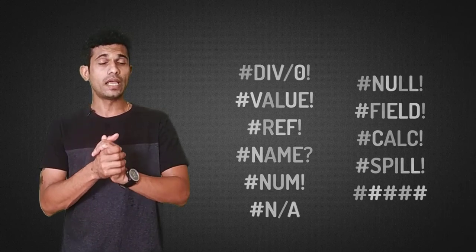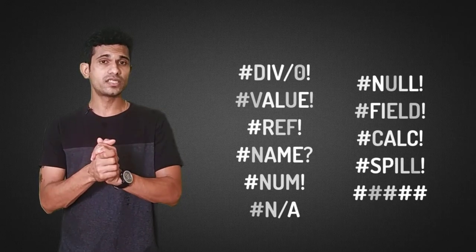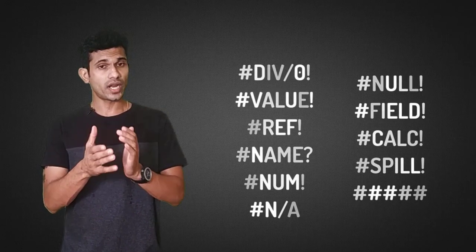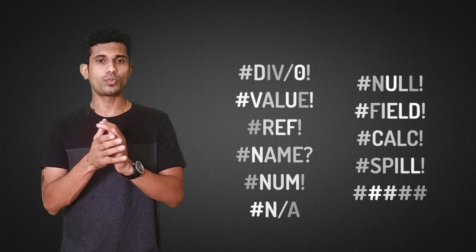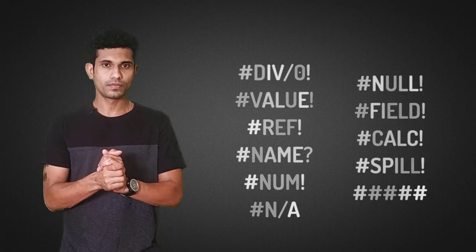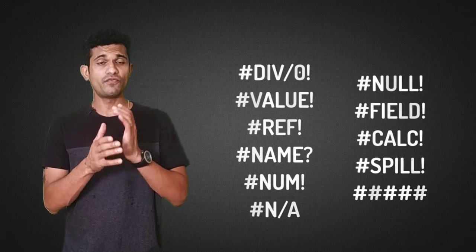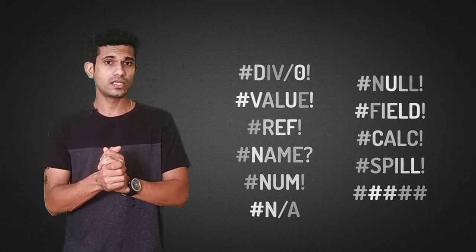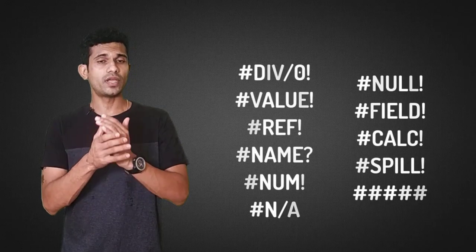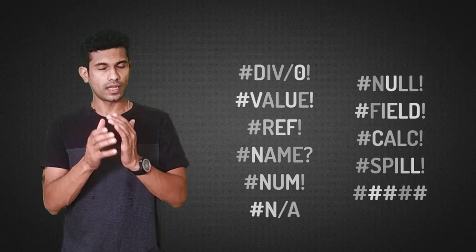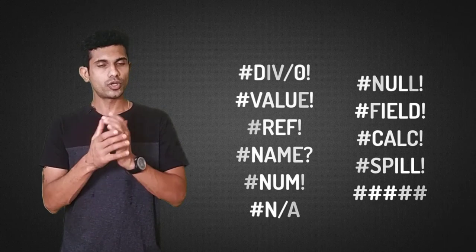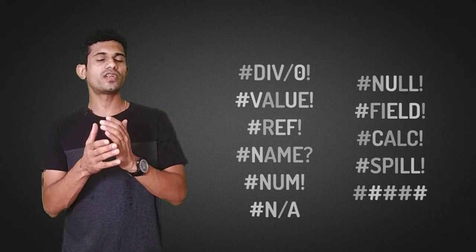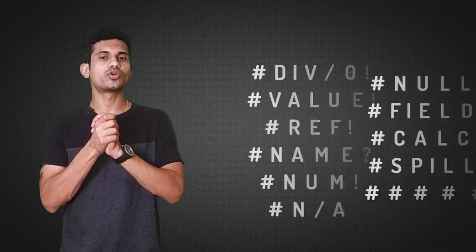For example, a division error says you are trying to divide a number by zero, which is not possible. Similarly, a value error says you are using a data type in the wrong way, which is not acceptable. So let's go through the different errors in Excel and see how to troubleshoot them.